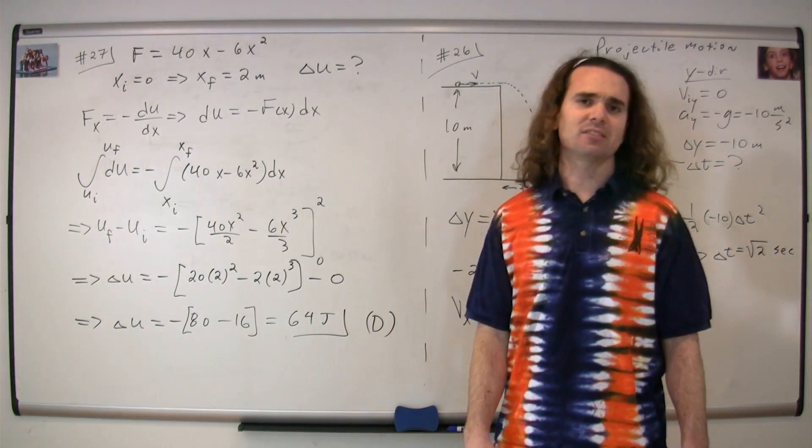Mr. P? Yes, Bobby? If this is a spring, why can't we just use the equation for the energy stored in a spring? Yeah, one-half kx squared. Don't you mean one-half times the spring constant times the displacement from equilibrium squared?